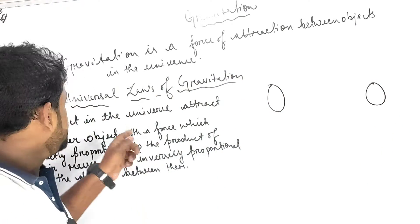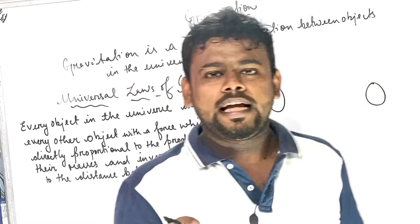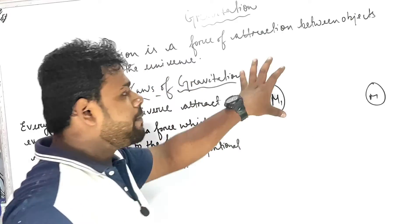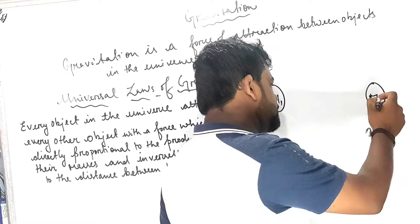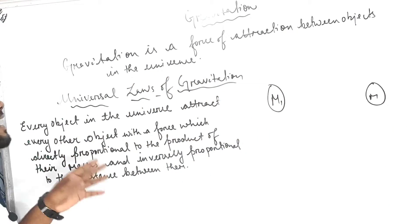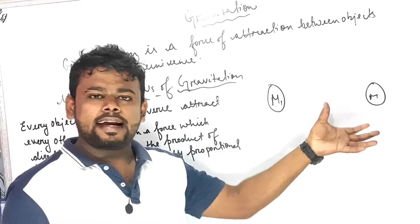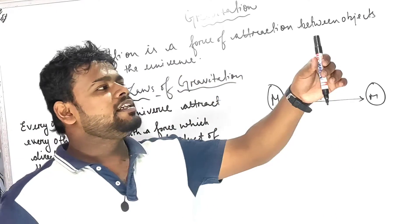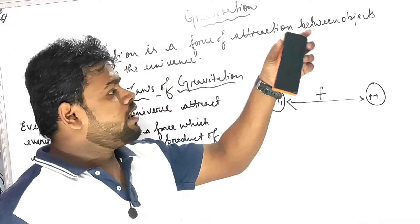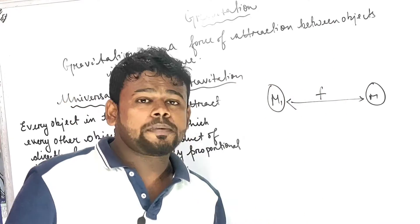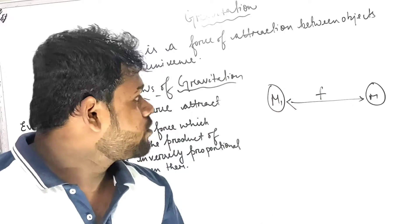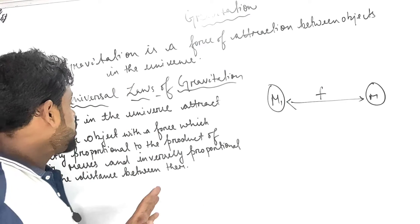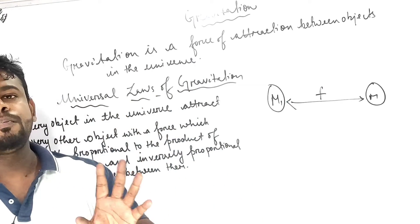Every object in the universe attracts every other object with the help of a force. This duster has some mass, and the marker has some mass — so there is a force between them. The duster falls toward the Earth because the Earth has a very large mass. He states: every object in the universe attracts every other object with a force which is directly proportional to the product of their masses.